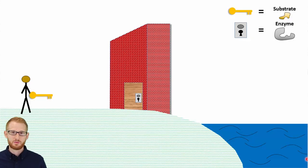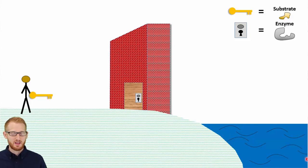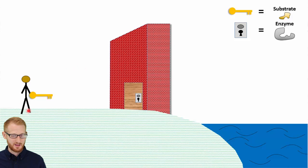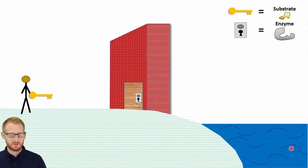As an analogy for enzymes, basically what you have is a reaction in the body that wants to take place. With bioenergetics, it's hopefully going to end with ATP, which is the energy molecule that the body uses. In our analogy, we have this person who wants to get past this wall and down to the ocean in order to catch fish to eat, in order to survive.